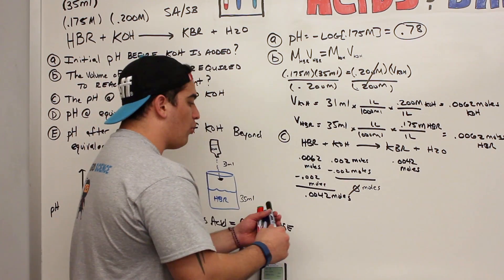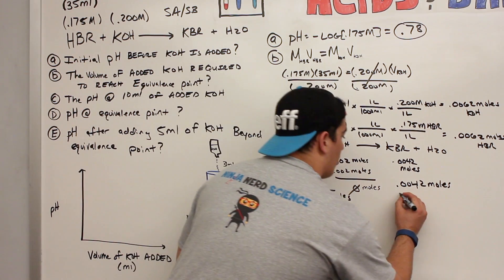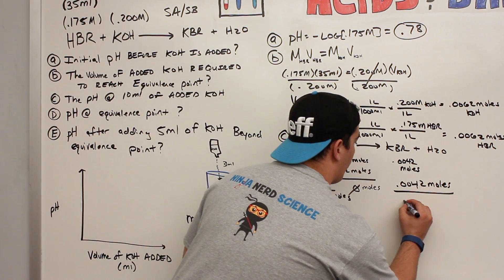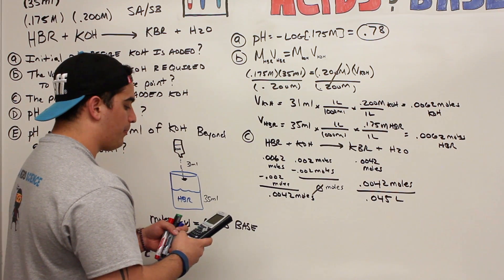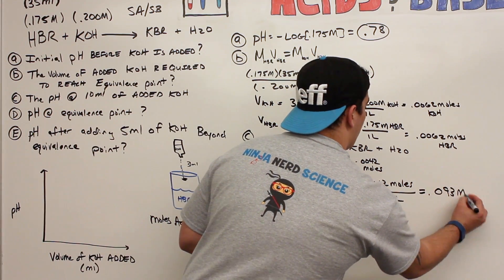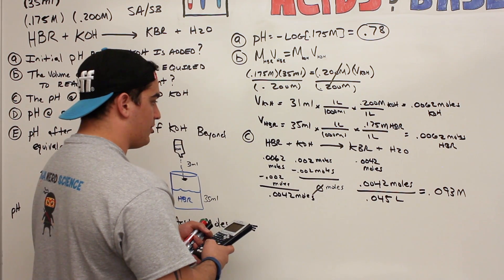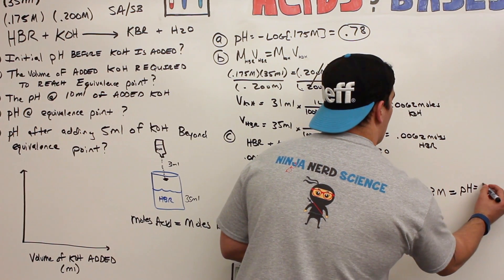To get the molarity of the remaining HBr: the total volume is 35 + 10 = 45 mL = 0.045 L. Molarity = 0.0042 ÷ 0.045 = 0.093 M. Then pH = −log(0.093) = 1.03. The pH went up from 0.78 to 1.03, which makes sense — we added some KOH but not much.